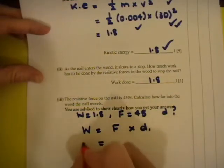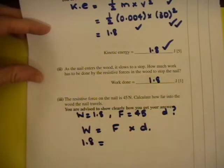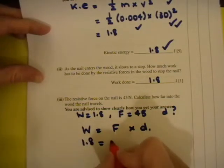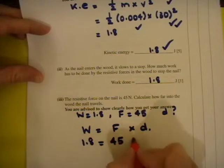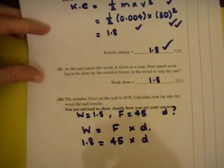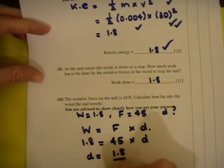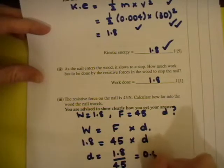So work is equal to 1.8, and force is 45 times the distance. So the distance is equal to 1.8 divided by 45. And the answer comes out to be 0.04 metres.